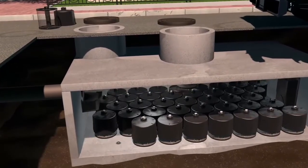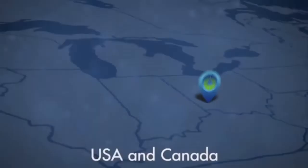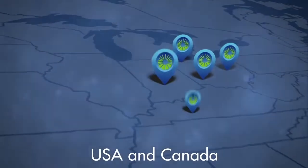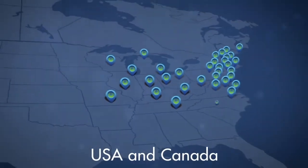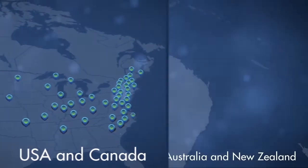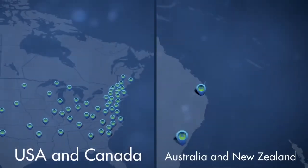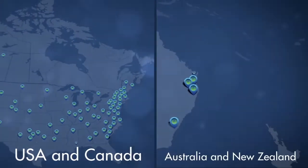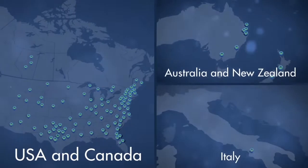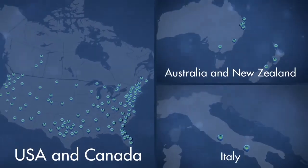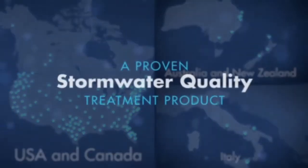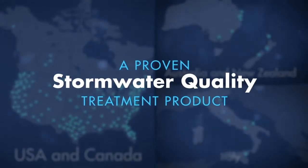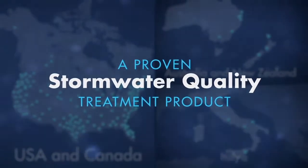With over 150,000 cartridges in use and performance verified by multiple regulatory agencies — including the Washington State Department of Ecology, the New Jersey Department of Environmental Protection, Gold Coast City Council and Brisbane City Council, which are two of the largest local government authorities in the Southern Hemisphere — the storm filter is a proven stormwater quality treatment product.